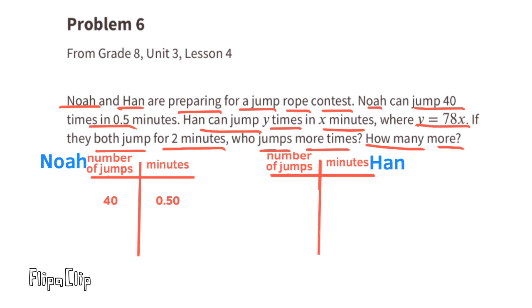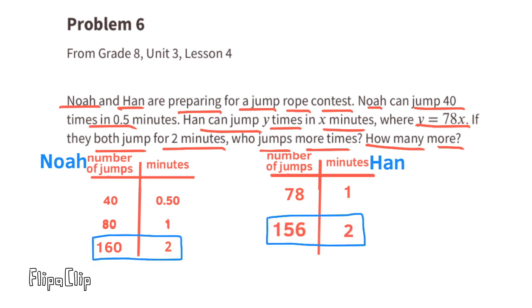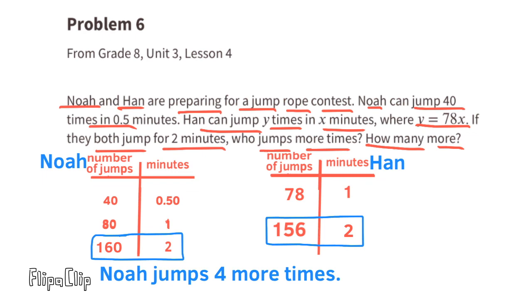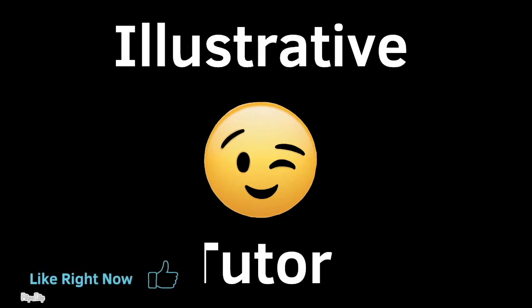Noah can jump 40 times in a half a minute, which would be 80 times in 1 minute and 160 times in 2 minutes. Han jumps 78 times in 1 minute, which would be 156 times in 2 minutes. Since 160 jumps is more than 156 jumps in 2 minutes, Noah jumps 4 more times than Han in 2 minutes.